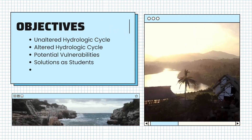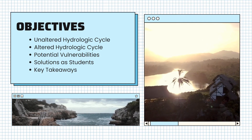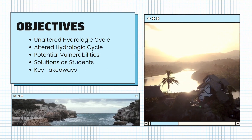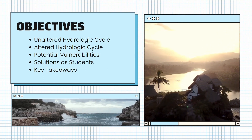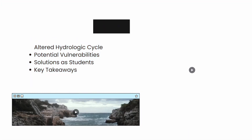In this presentation, we will explain two versions of the cycle. One is the undisturbed natural process, while the other is the altered model that includes the presence of human interventions and the effects of climate change.